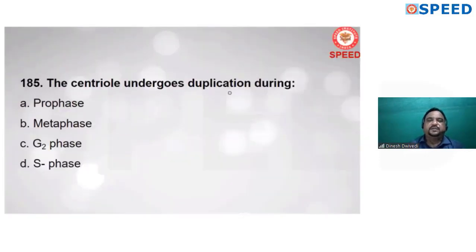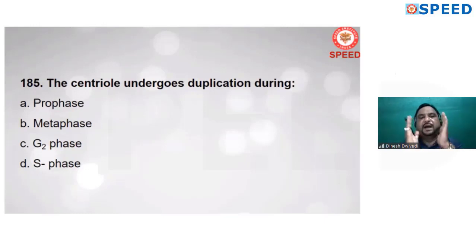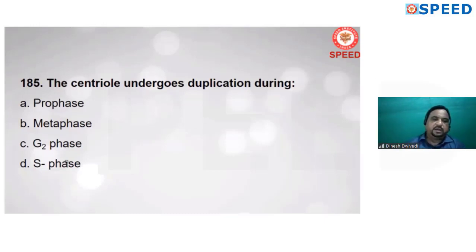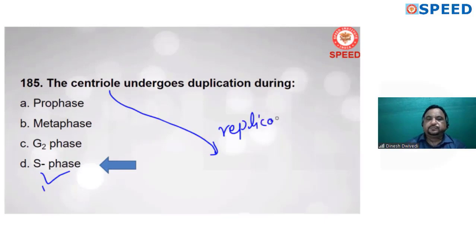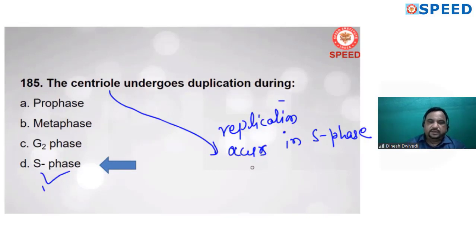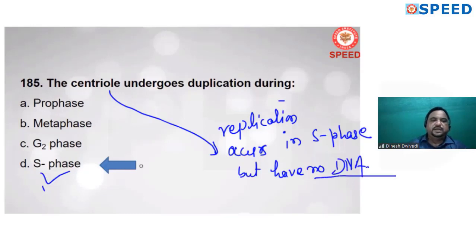The centriole undergoes duplication during which phase? Centriole replication (duplication) occurs during S phase. All cell organelles replicate in G2 phase, but centriole duplication occurs only in S phase, having no DNA. Alternate A is correct.